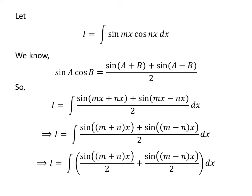The integrand can be expressed as the sum of two fractions, so I is equal to the integral of sine of (m plus n) times x upon 2, plus the integral of sine of (m minus n) times x upon 2, with respect to x.